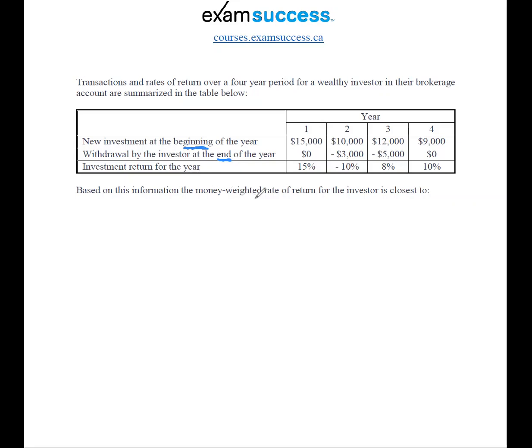For the money-weighted rate of return, we need to find the cash flows. From these cash flows, we're going to calculate the internal rate of return. That's how we're going to calculate the money-weighted rate of return. You probably knew that. But let's interpret the information given in this table. This is what is critical. This is how CFA Institute's going to trick a lot of candidates.